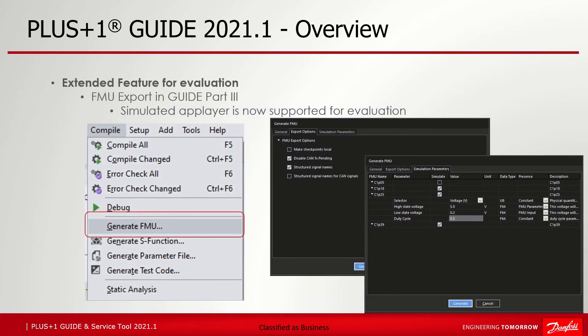The other extended feature for evaluation is FMU export in Guide part 2. The FMU — functional mockup unit — that can be used in simulation tools to simulate software behavior was already introduced in the previous Guide version 12.2. In 21.1 the FMU dialog to set up the FMU export has been updated: two new signals have been added to the CAN database, and command line and structured signal names are now also supported. Also, a simulated app layer for evaluation is supported by specific HWD to simulate physical hardware pins. Please check out the Guide manual for how to use the FMU functionalities.